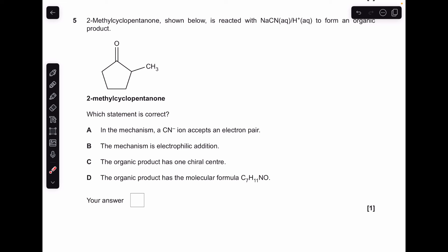Moving on to number 5. Which is the correct statement? In the mechanism, a CN- ion accepts an electron pair. No, that's wrong because CN- ions are nucleophiles. They are electron pair donors. So they don't accept electron pairs. So A is wrong. The mechanism is electrophilic addition. Well, no, it's nucleophilic because the CN- ion, as I've just said, is a nucleophile. The organic product has one chiral centre. So we're going to need to draw up the organic product of this reaction. So there's the organic product there. And we've actually got two chiral centres in this because that's chiral, and so is that one. So C isn't correct. So it's got to be D. And if you count up all the carbons, hydrogens, nitrogen and oxygen, you do get C7H11NO.